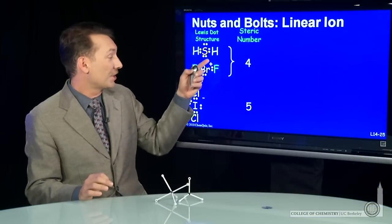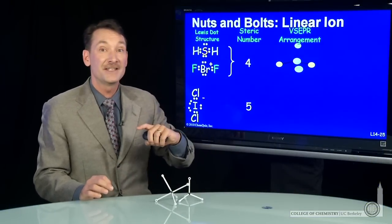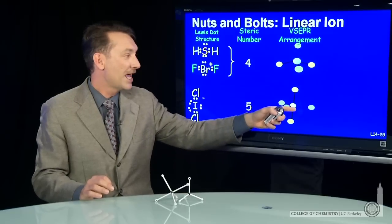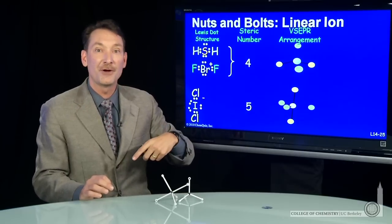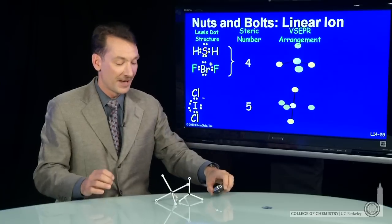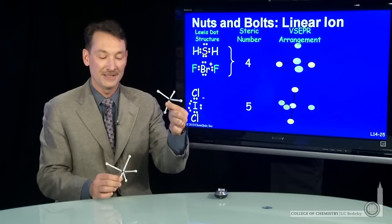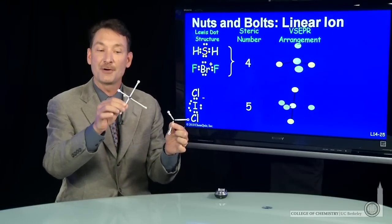Now, steric number four and steric number five give us VSEPR arrangements of tetrahedral for steric number four and trigonal bipyramidal for steric number five. I have those two here. Here's the tetrahedral arrangement and the trigonal bipyramidal arrangement.